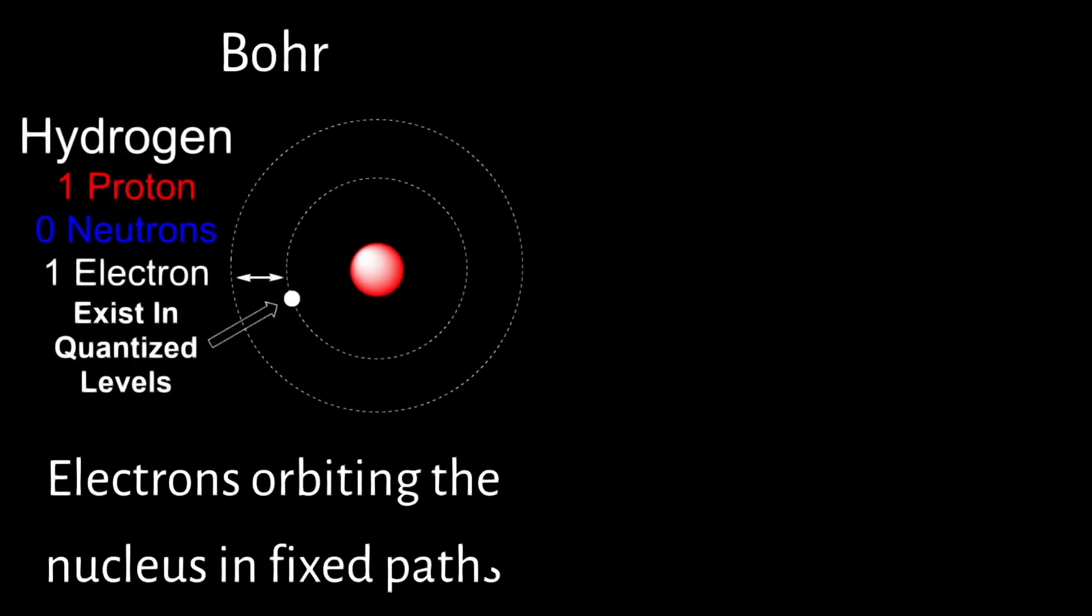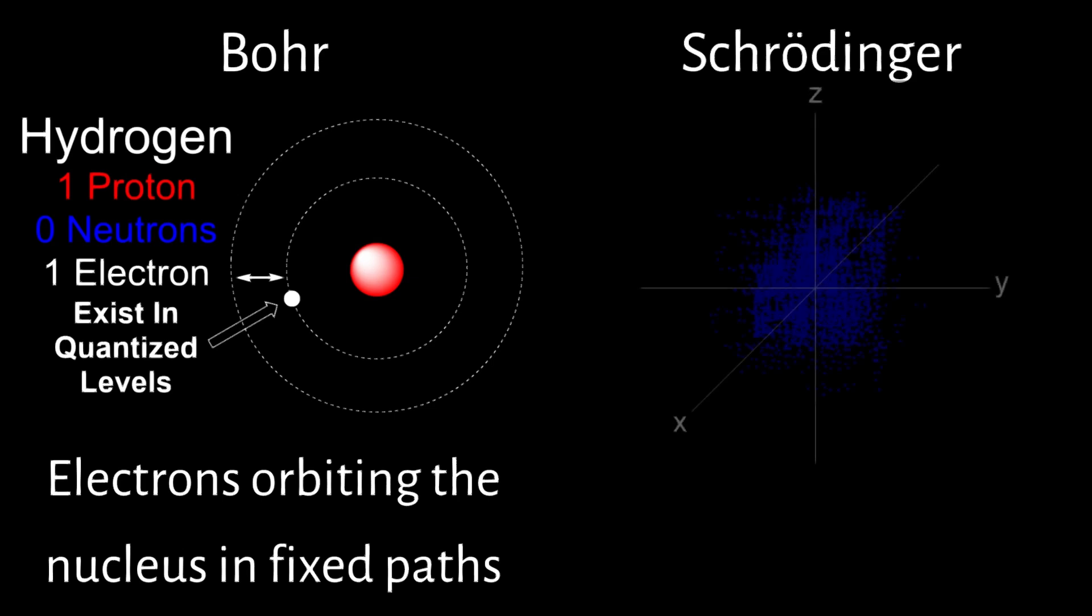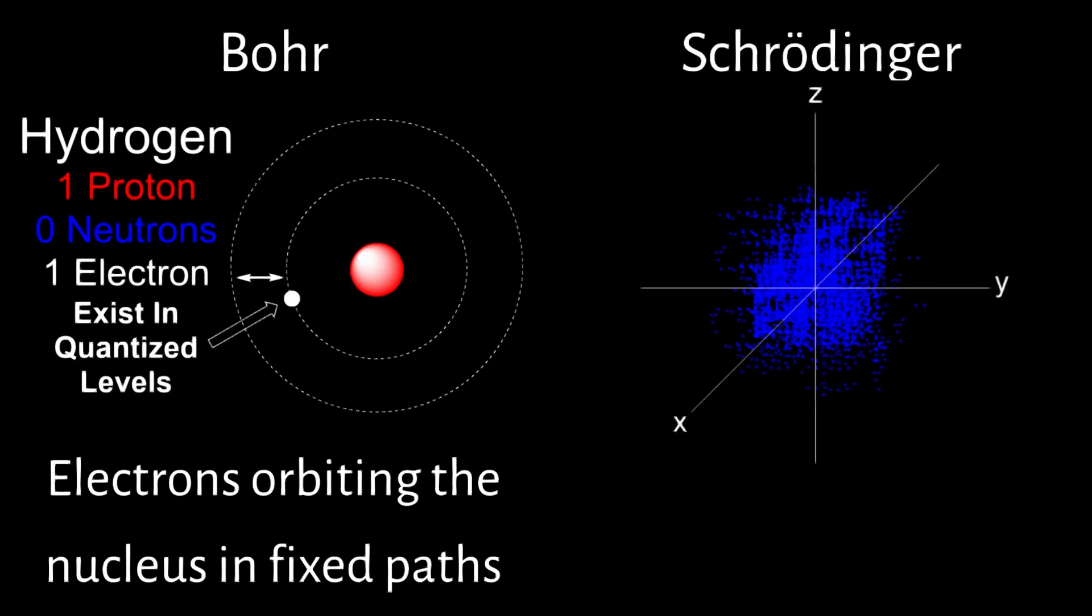Unlike Niels Bohr's model, which depicted electrons orbiting the nucleus in fixed paths, Schrödinger's approach suggests that electrons occupy three-dimensional spaces known as orbitals. These orbitals represent probabilities rather than definite paths, introducing the concept of electron density distribution.